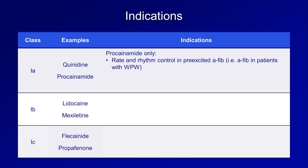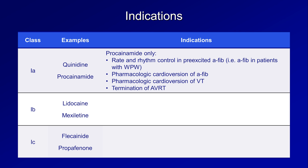Other indications for procainamide include pharmacologic cardioversion of AFib in patients without WPW, cardioversion from ventricular tachycardia, and termination of AVRT — AV reentrant tachycardia — which is a reentrant supraventricular tachycardia seen specifically in patients with WPW. The 1b agents lidocaine and mexiletine are used solely as second or even third line agents for the prevention of VT.